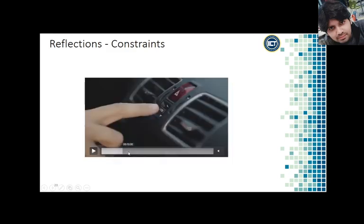In this video, a person is changing the time and date settings in his car while the car is not moving. If the car is moving, the car will disable all the controls for setting date and time. This is a kind of constraint — it will not allow you to change the time and date while you are driving the car. It is a constraint in terms of safety.